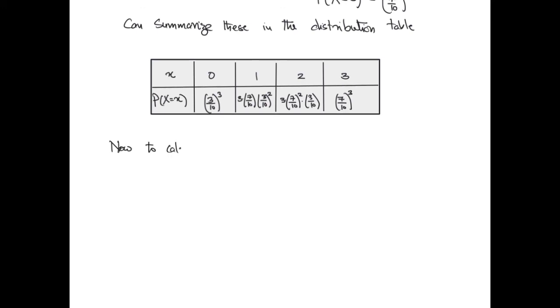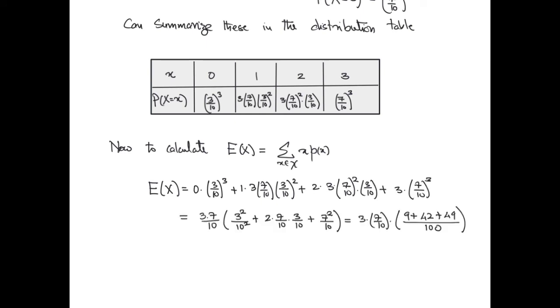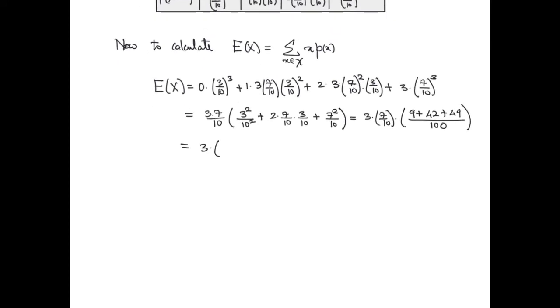We can now calculate the expected value of this random variable. It is going to be the sum of all x over script X of x times px. Plugging in the values into the sum, and simplifying, we get the expected value as 3 times 7 over 10.